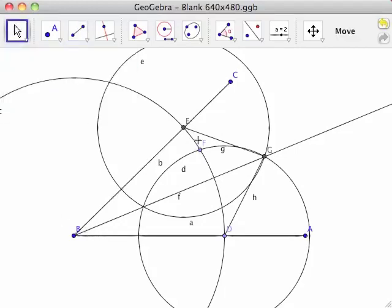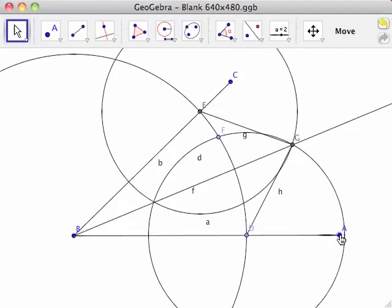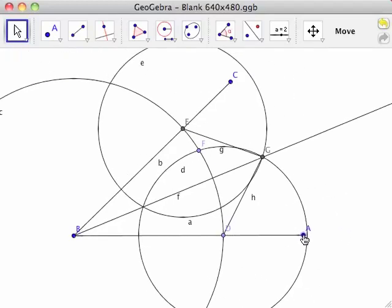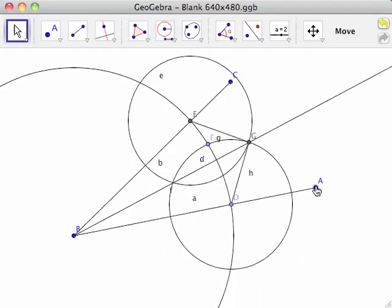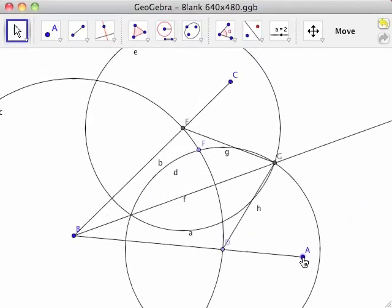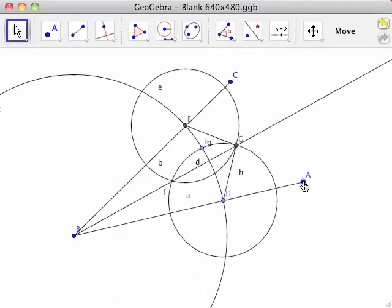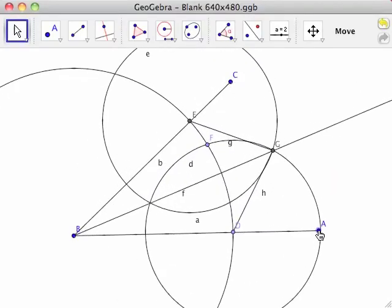Moving point A horizontally changes the radius of circle C. Moving point A vertically can also change the radius of circle C, but also changes the radius of circle D and therefore circle E.